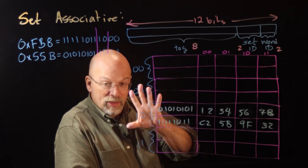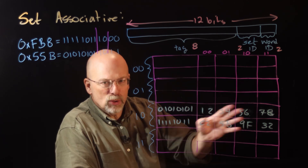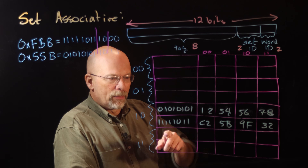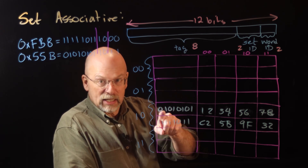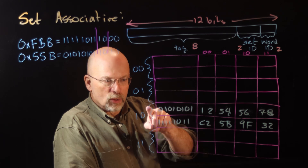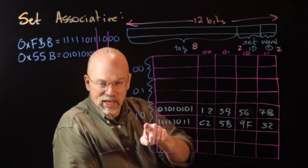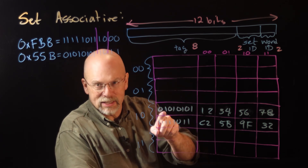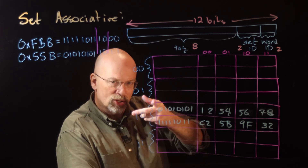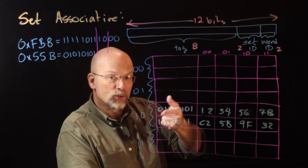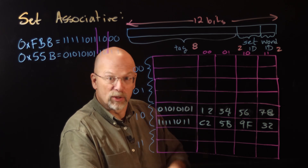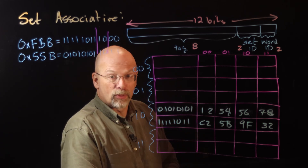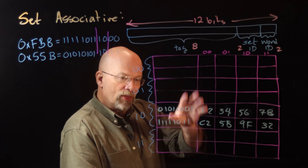With two-way set associative, the replacement algorithm is pretty easy. For least recently used, whatever the last one used is, you clear the flag associated with it and set the flag on the other one. For first in first out, similarly, whatever the last one loaded is, you clear its flag and set the other one's flag. It's just a binary 1 or 0 — a 0 means throw out the first line, a 1 means throw out the second. Usually this can be done with just a single bit.